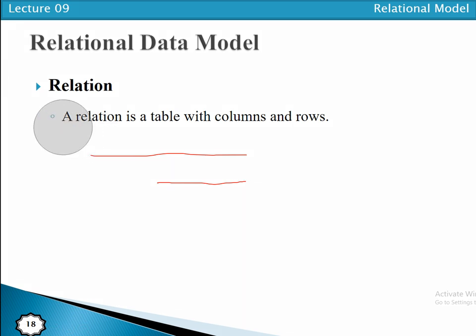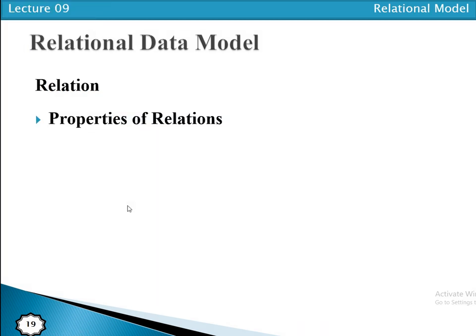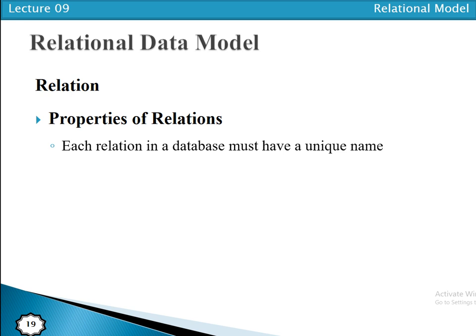A relation is a table with columns and rows, represented as a two-dimensional table. Now let's look at the main properties of a relation. First, each relation in a database must have a unique name. In one database, the relation name must be unique — for example, in an HR database, if a relation is named 'emp', that name must not be repeated.